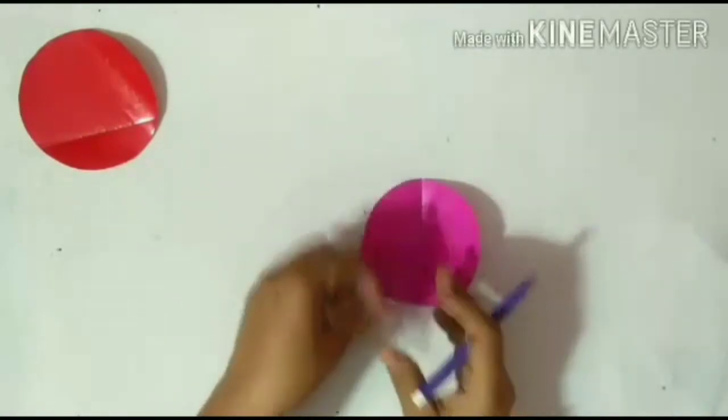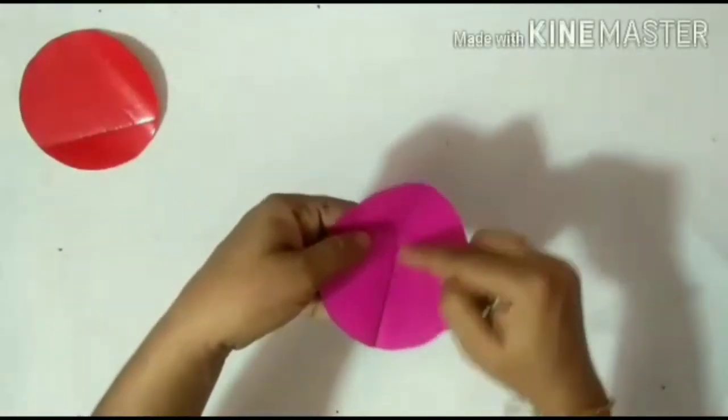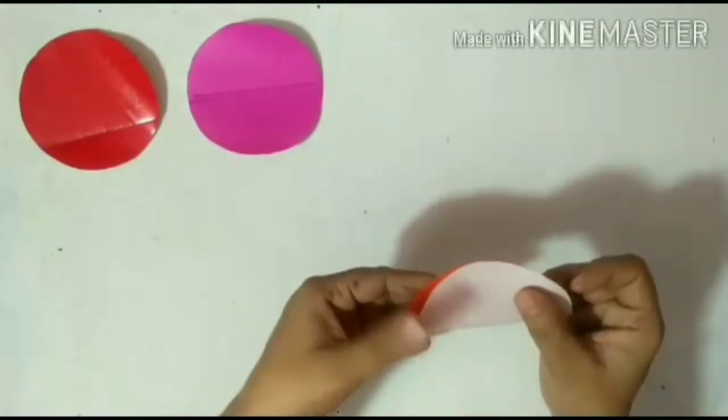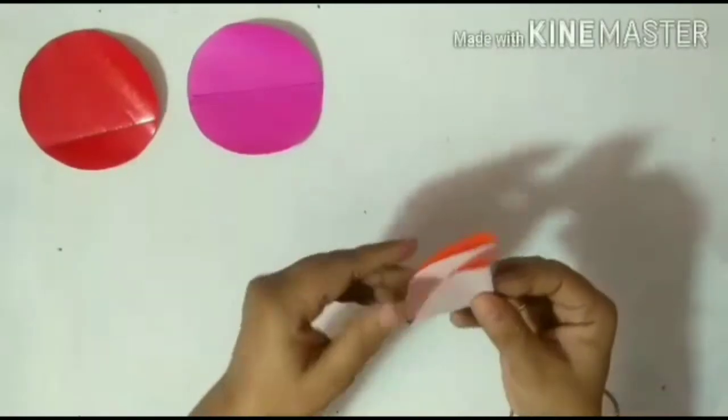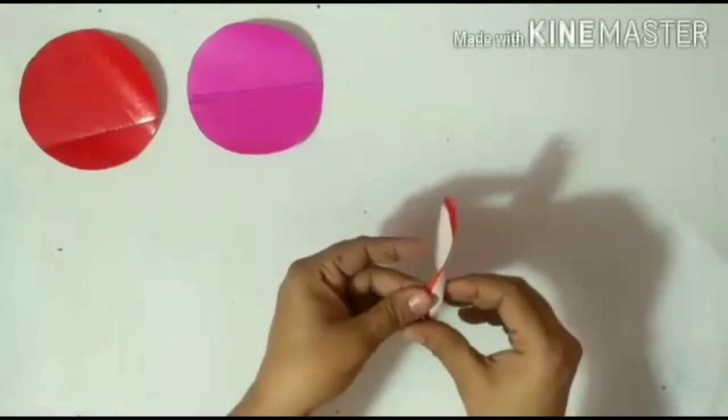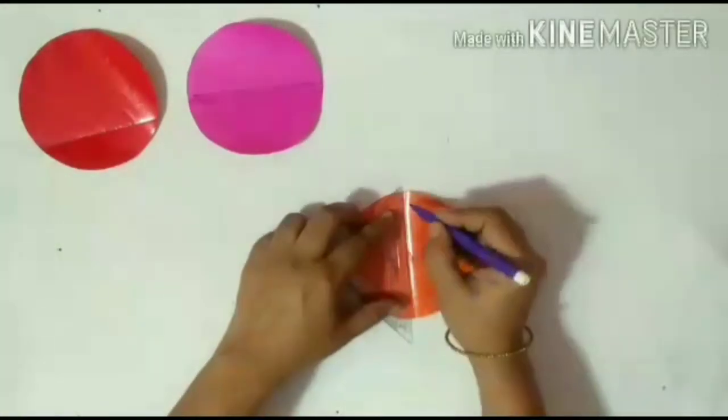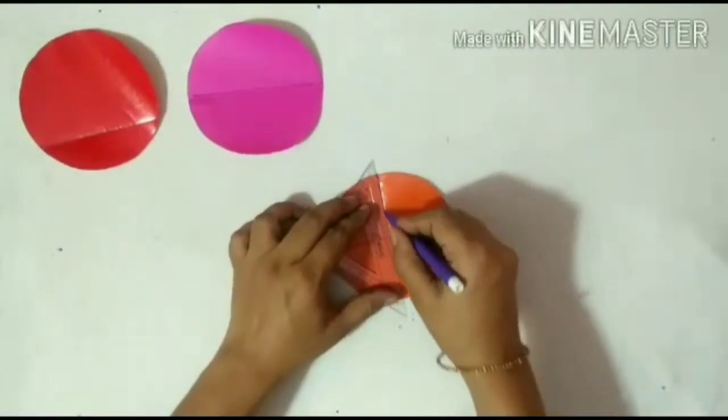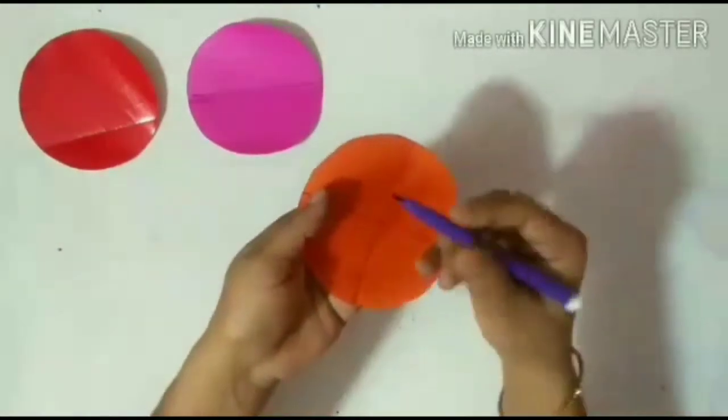This line is called a diameter of the circle. Take one more shape. Now fold the shape in such a way so that we get a quarter part of it. Unfold the paper shape. Now press the lines of the folds. The point at which these lines meet each other is the center of the circle.